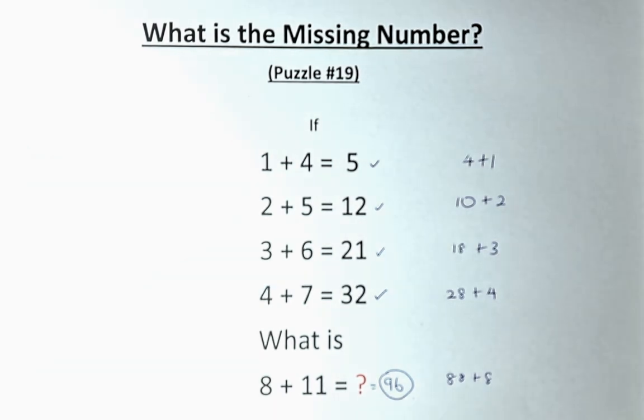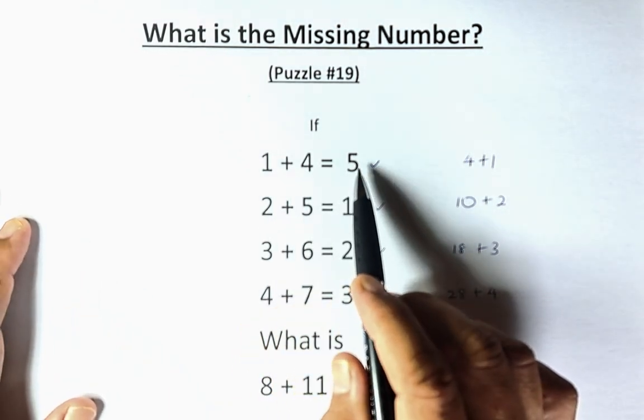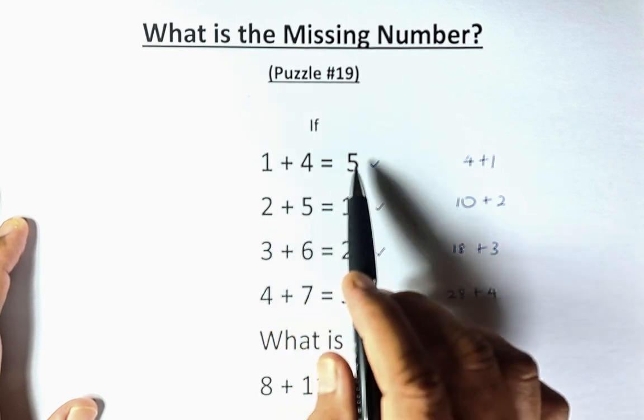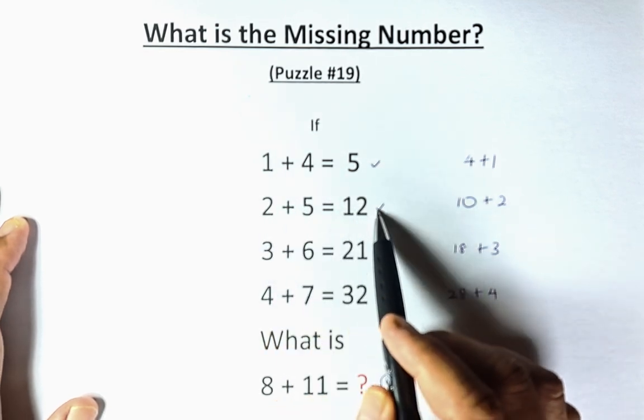But there is another school of thought who have a different approach to it. So 1 plus 4 is 5, then you add this number, 5, to the next number. 5 plus 2 plus 5 is going to be 12.